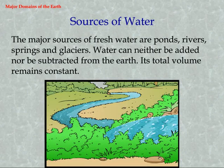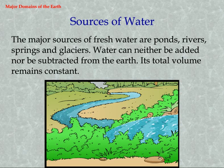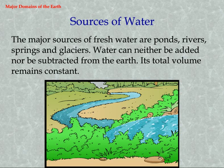Sources of Water. The major sources of fresh water are ponds, rivers, springs, and glaciers. Water can neither be added nor subtracted from the Earth; its total volume remains constant.